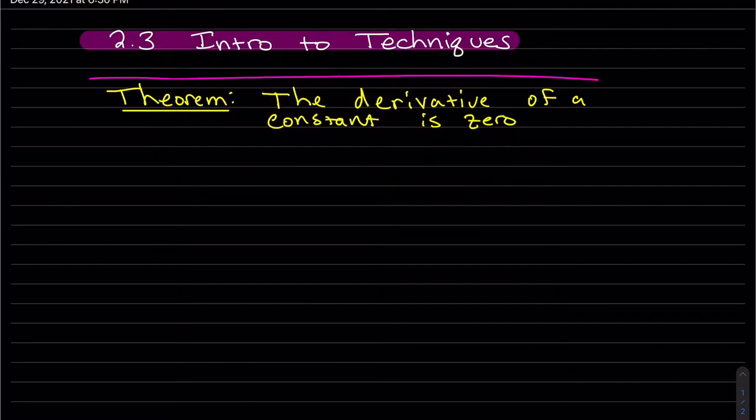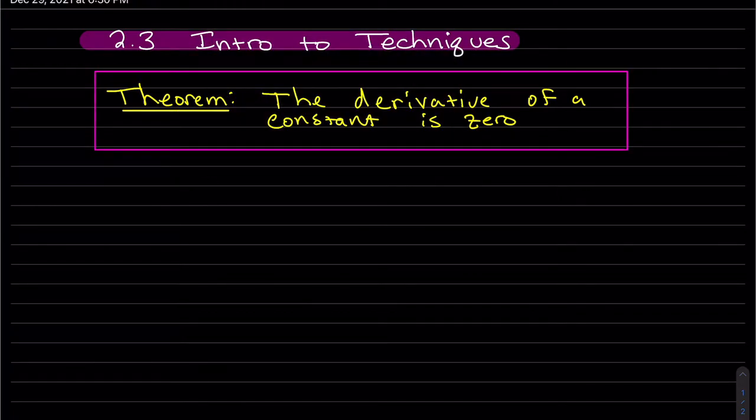We're going to start off, we'll call it a theorem. So if I have a function that's a constant, it's like y equals c. What does it look like at every point? The slope at every point is 0.